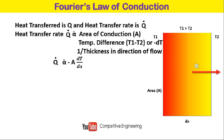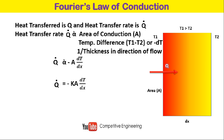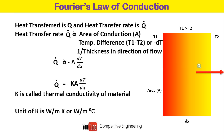We can convert this into an equation by introducing a constant: Q dot equals minus K times A times dT/dx, where K is a constant called the thermal conductivity of the material.